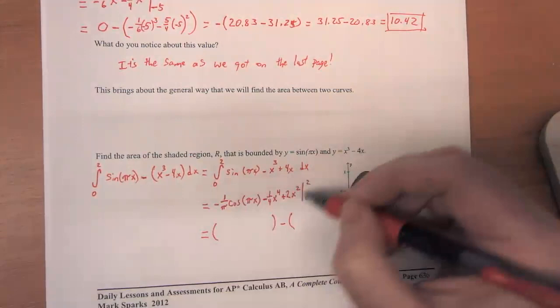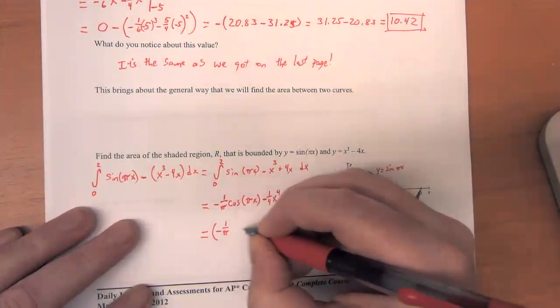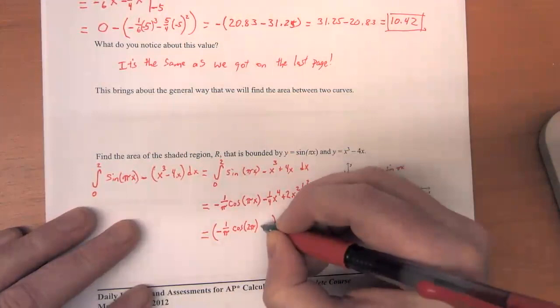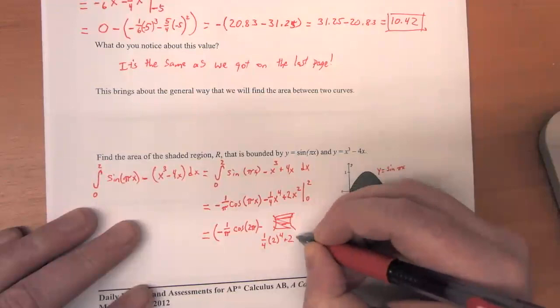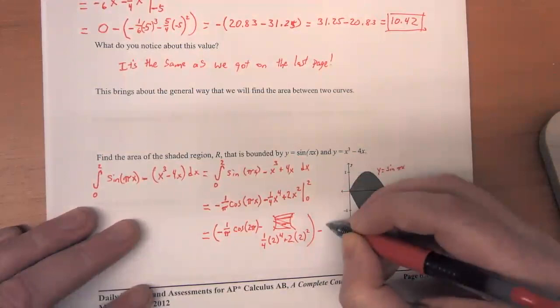So first thing we're going to do is we're going to plug 2 into this expression. So that's negative 1 over pi times cosine of 2 pi minus 1 quarter times 2 to the fourth plus 2 times 2 squared.